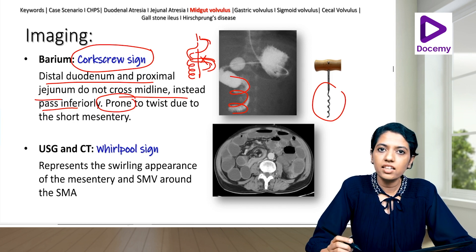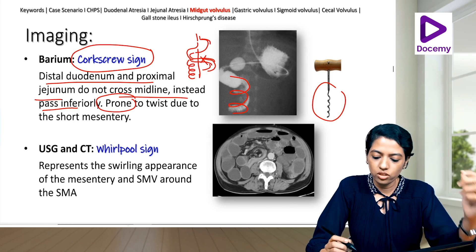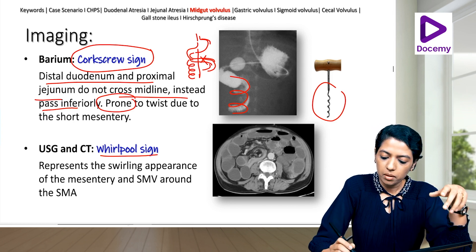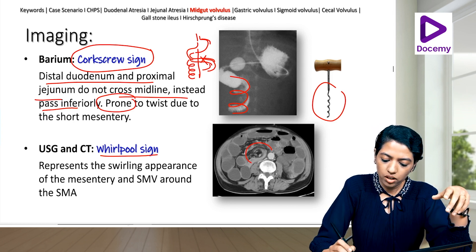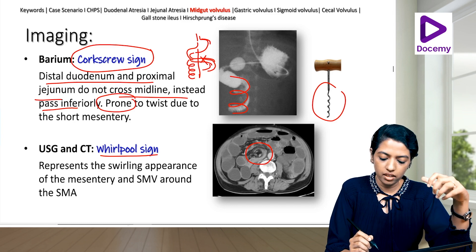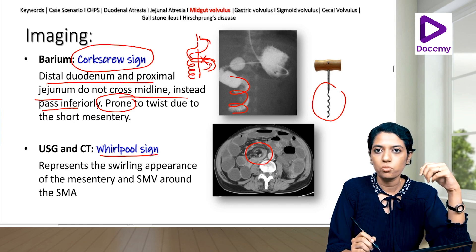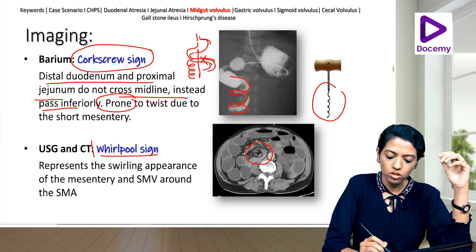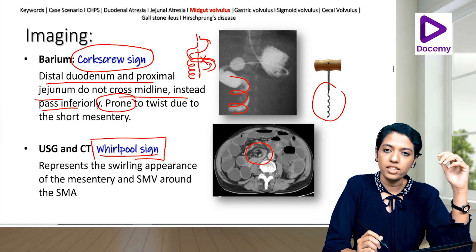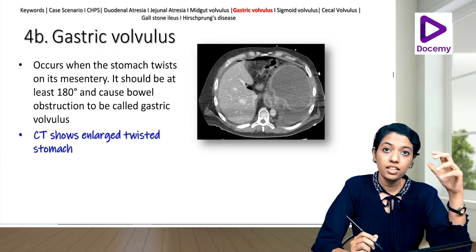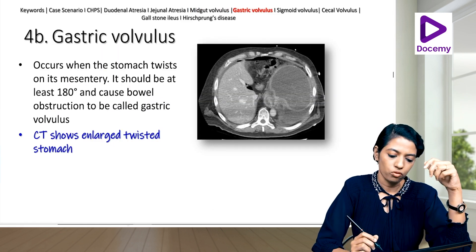On ultrasound and CT, you get the whirlpool sign, representing the swirling appearance of the mesentery and superior mesenteric vein around the superior mesenteric artery.